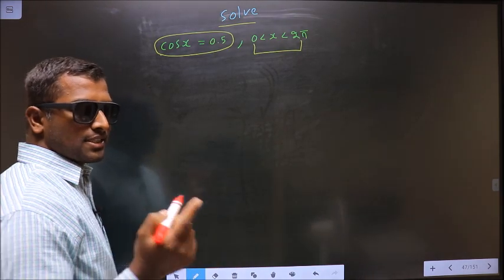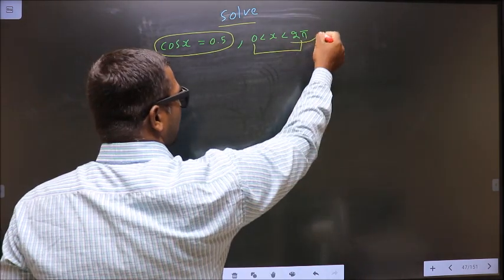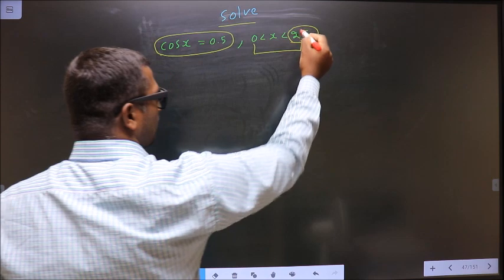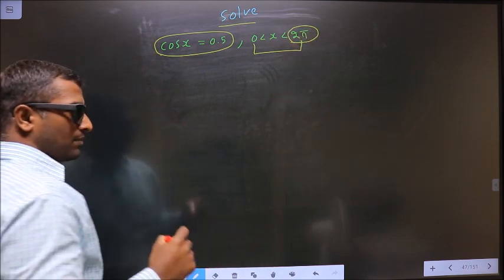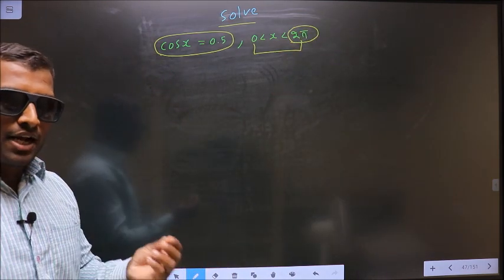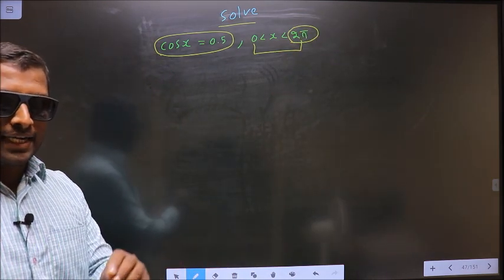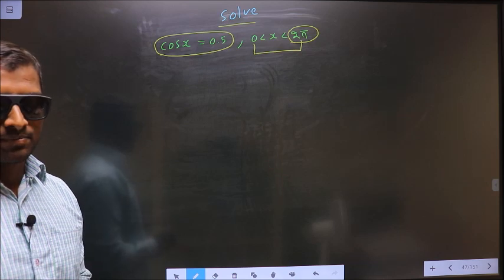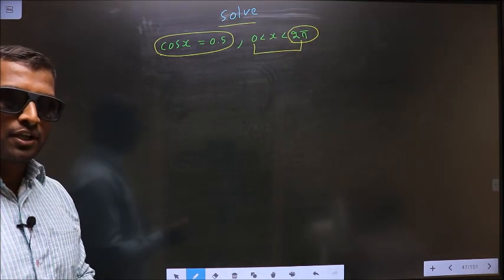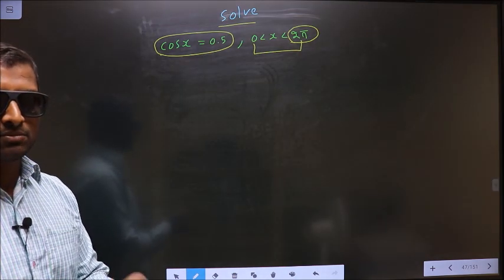The key here is that the interval uses 2 pi, which means your answer should be calculated in radians. So put your calculator in radians mode.